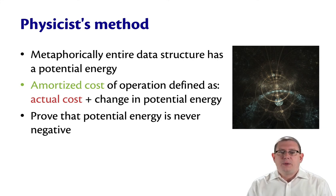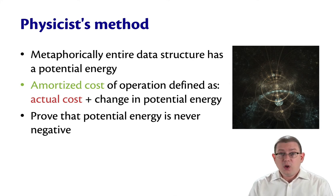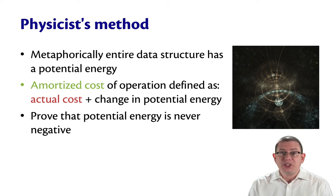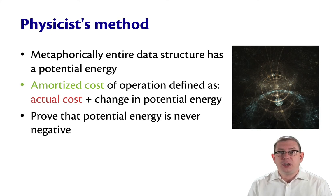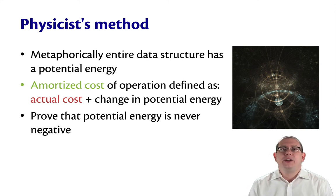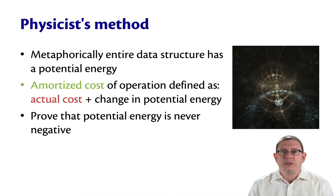With the physicist's method, we define the amortized cost of an operation as the actual cost, as usual, plus the change in potential energy, which might go up or down. Here, we prove that the potential energy is never negative. And again, that ensures that the amortized costs always are a conservative bound on the actual costs.